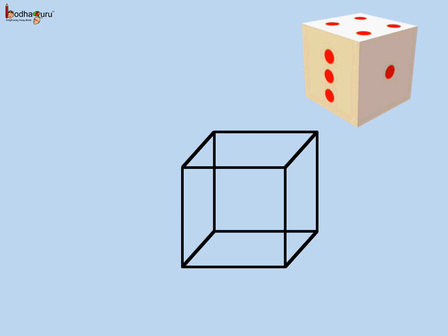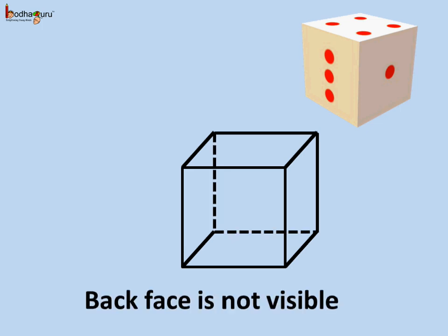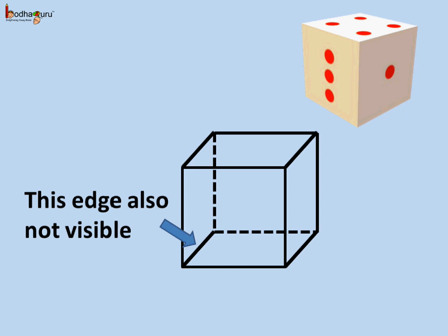But in real life, we cannot see all the faces and all the edges at a time. From this view of the dice, we cannot see the back face. So, let's show the edges which we cannot see by the dotted lines, to make the drawing more realistic.